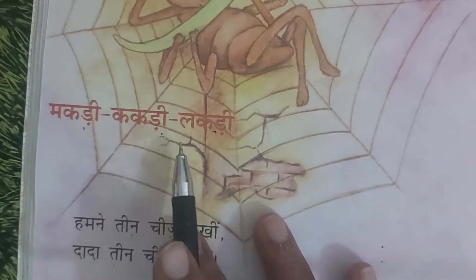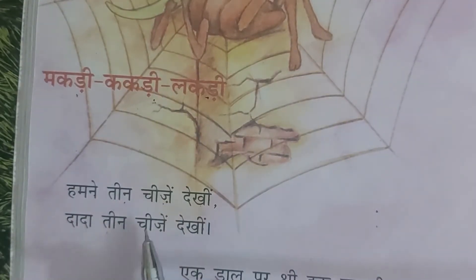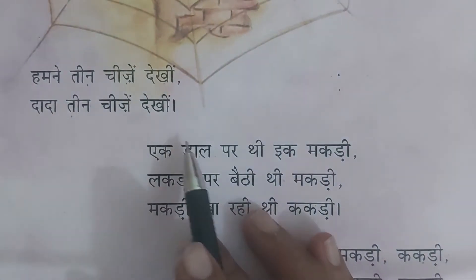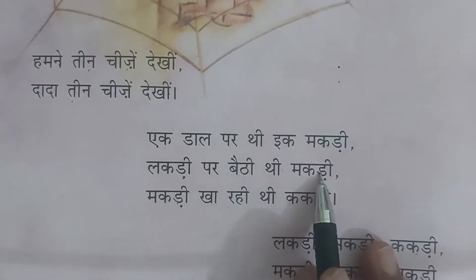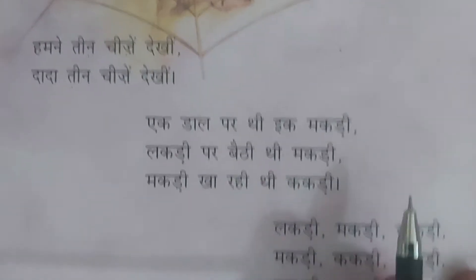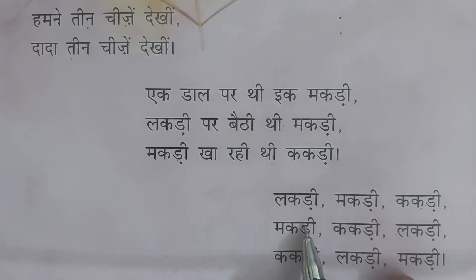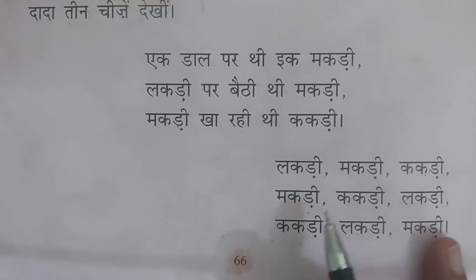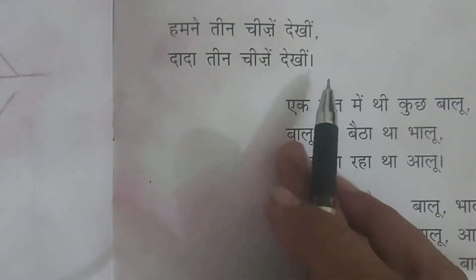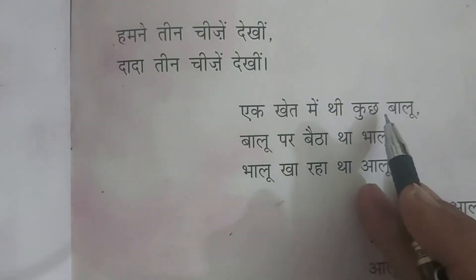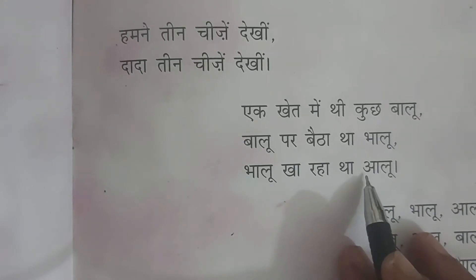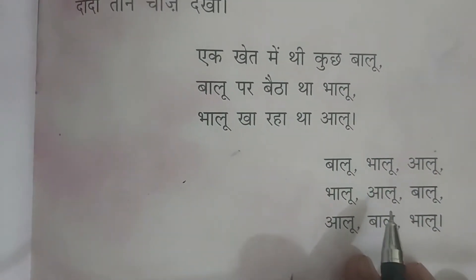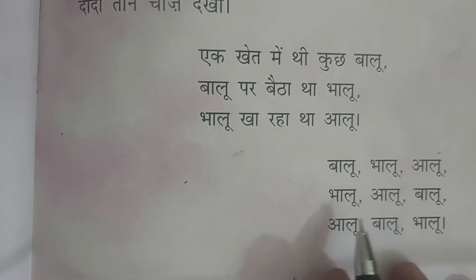मकडी, ककडी, लकडी — हमने तीन चीज़ें देखी। दादा तीन चीज़ें देखी। एक डाल पर थी एक मकडी, लकडी पर बैठी थी मकडी, मकडी खा रही थी ककडी। एक खेत में थी कुछ बालू, बालू पर बैठा था भालू, भालू खा रहा था आलू। बालू, भालू, आलू।